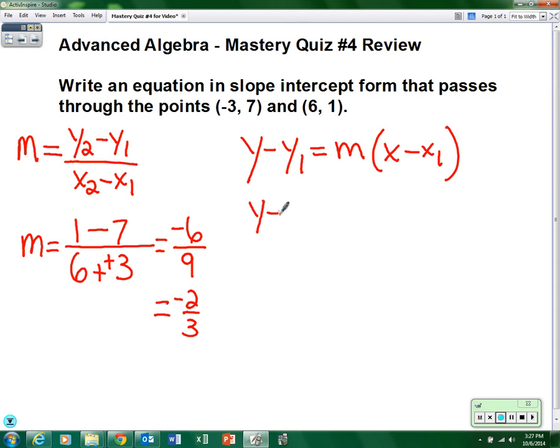Alright, so let's plug the numbers in. So y minus... y₁ I'm going to let that be the number 1, equals the slope which we just found, negative 2/3, times x. And the x₁ is going to be the 6, minus 6.